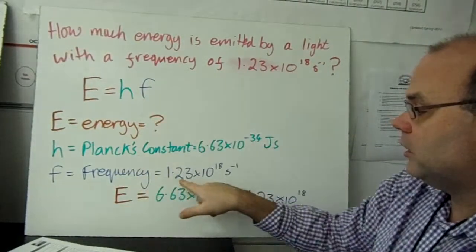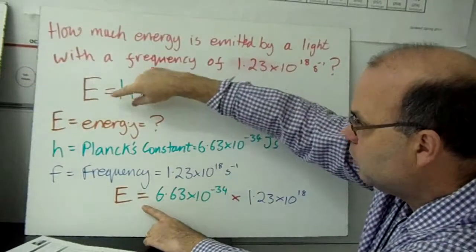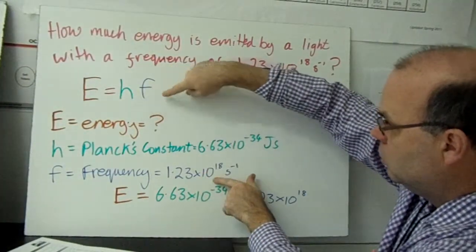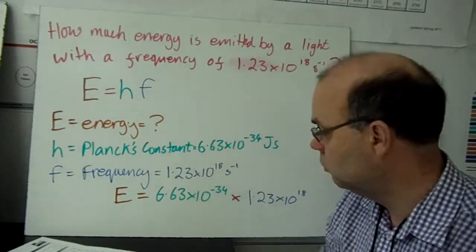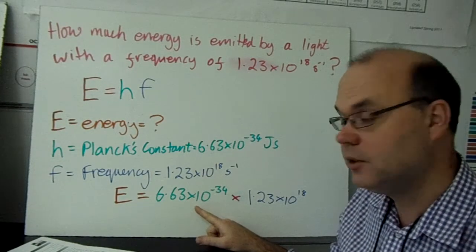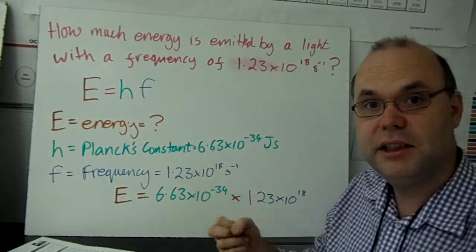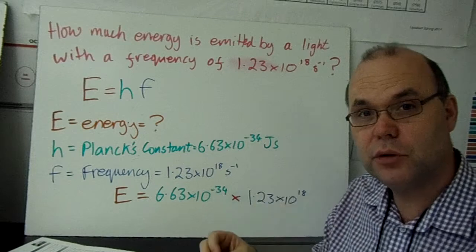Frequency, that's what they told us. So we plug them into our equation. And then we just work it out. 6.63 E negative 34 times 1.23 E 18. You're going to get a pretty small number from that.